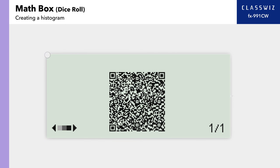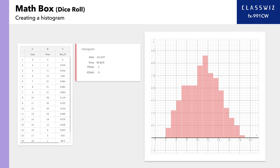Read the QR code with your smartphone or other device to see the created histogram. This distribution ideally follows a normal distribution.